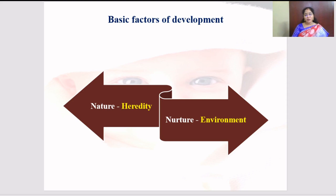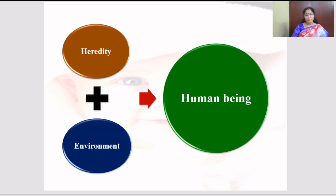What are the basic factors of development? Heredity and environment. Heredity is whatever physical, emotional, and psychological traits we inherit from our parents. Environment is everything around the child. So heredity is referred to as nature, and environment is referred to as nurture. A human being is a complete product of both heredity and environment.